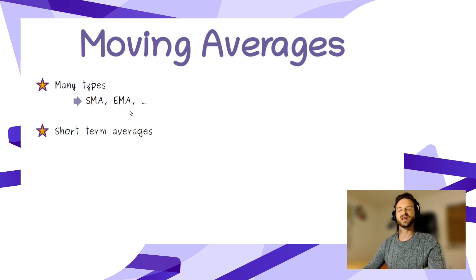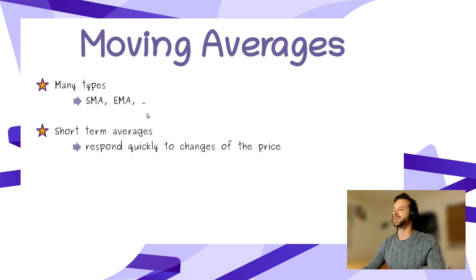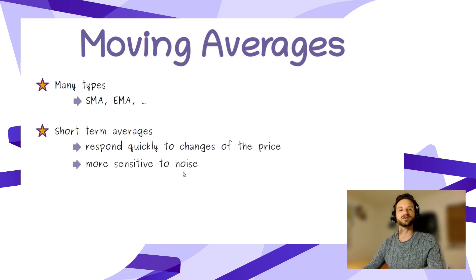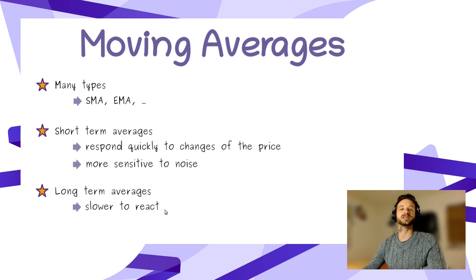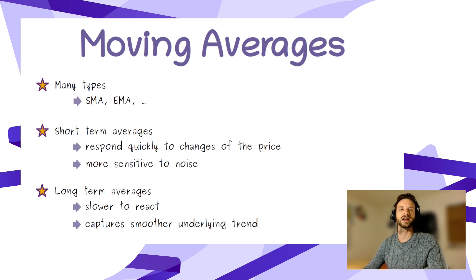The key idea with moving averages is that when you look at short-term moving averages — that is to say when the period over which you're averaging is small — you will have an indicator that responds quickly to changes in the price. This also means that it will be more sensitive to the noise of your asset value, in other words more sensitive to the high-frequency volatility in the price. In opposition, long-term moving averages are slower to react to changes in the asset value and therefore better capture the smoother underlying trend of your asset.